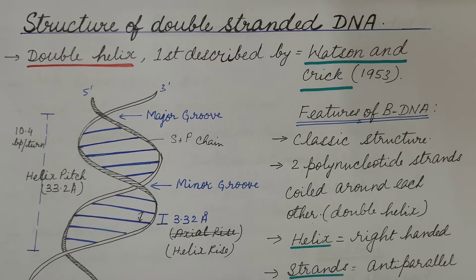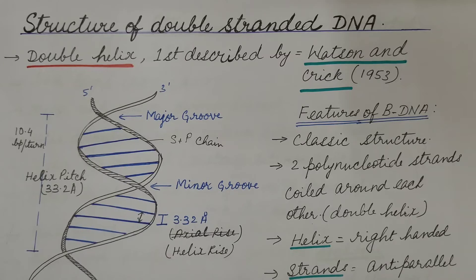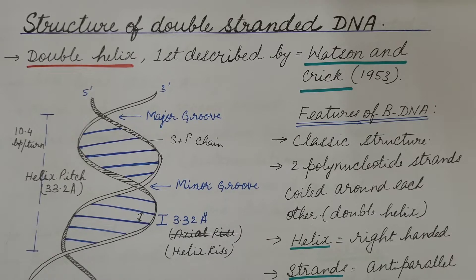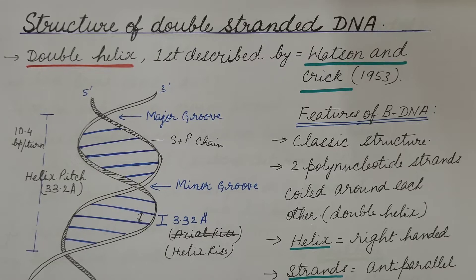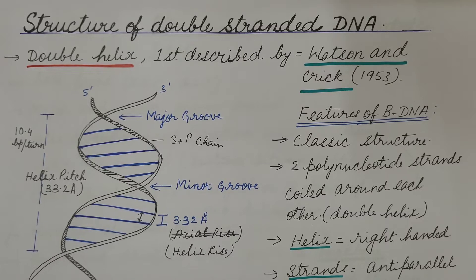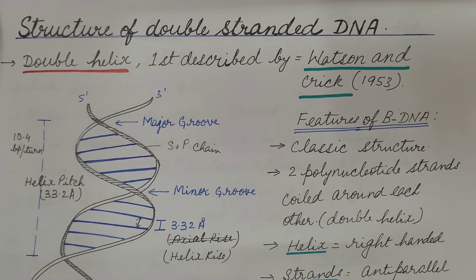Hello friends. We have started a new topic: Nucleic Acid. In the last video we discussed about the two types of nucleic acid, DNA and RNA; the monomeric unit, i.e., the nucleotide; and the three components of nucleotides — nitrogenous bases, pentose sugar, and phosphate group. We also discussed types of nitrogenous bases: adenine, guanine, cytosine, thymine, and uracil; the two types of pentose sugar — ribose and deoxyribose; nucleoside and polynucleotide; primary and secondary structure of polynucleotide; and Chargaff's rule. You can refer to my previous video; the link is given in the description box.